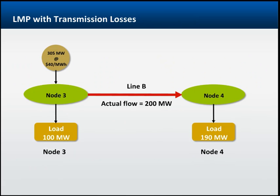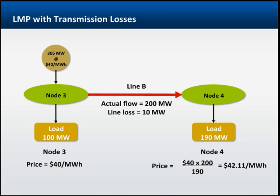In previous examples, line losses were not included in the LMP calculation. Some ISOs use this method, while others include the cost of line losses. If there are line losses on the transmission line between two nodes, and the ISO procedure calls for line losses to be included in the LMP calculation, prices can then be different in two adjacent nodes even if there is no transmission congestion, since line losses raise the price at the node where the power flows in. In this example, the price at node 3 is $40, while the price at node 4 is $42.11, since we are adding in the cost of line losses for getting power to node 4.